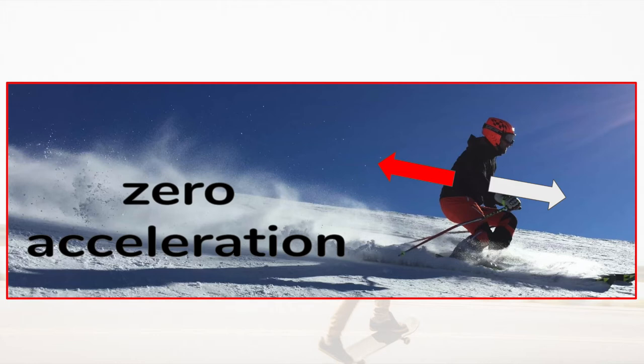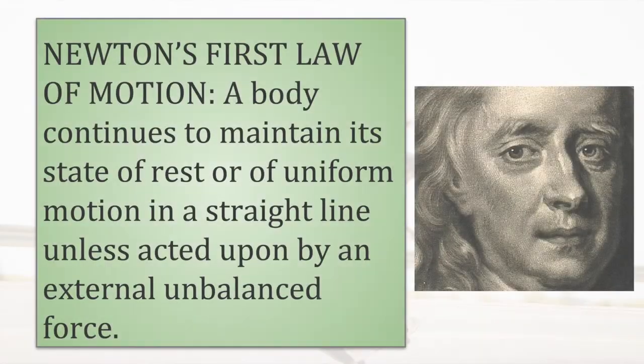For example, the skier is pulled downhill by a component of his weight, and his motion is resisted by drag and friction. The total force is zero, so he does not accelerate.